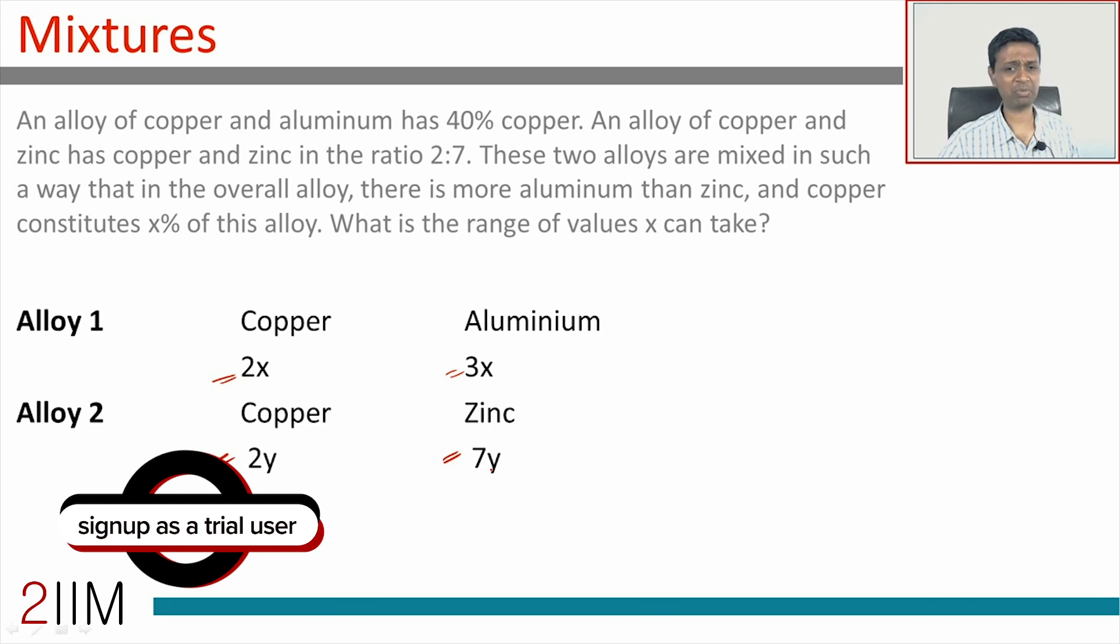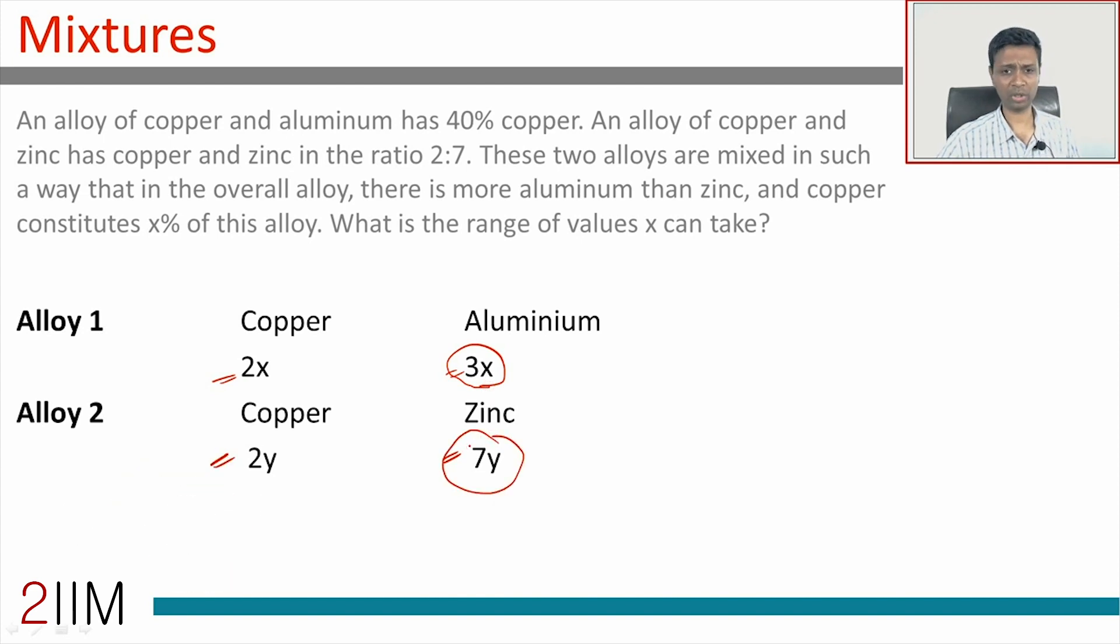Now in the overall alloy we need to have more aluminum than zinc. This 3x should be greater than this 7y when you are mixing both of these together. First thing to do is simplify these ratios so that there's something simple to look at.